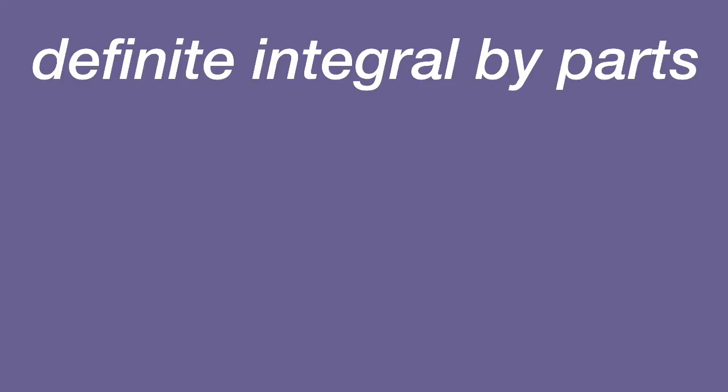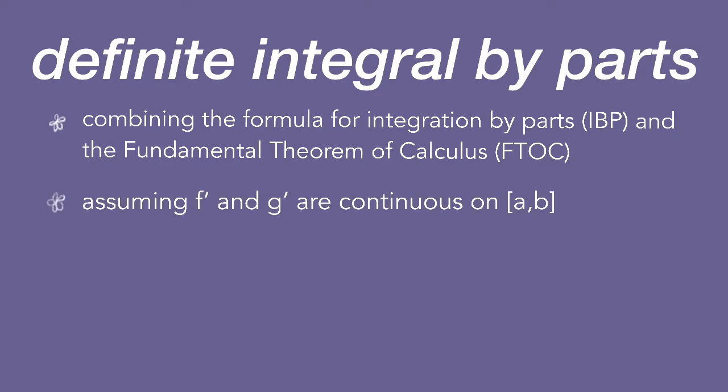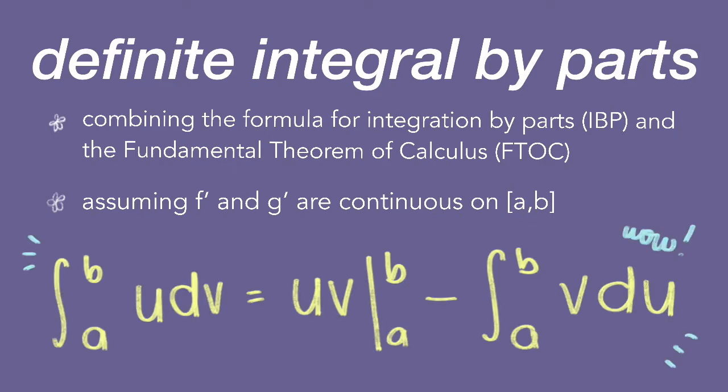So how does IBP change for a definite integral? Actually, not by much. We combine our IBP formula with the Fundamental Theorem of Calculus. For definite integrals, we assume that f prime and g prime are both continuous on the interval of integration. The formula becomes: the definite integral from a to b of u dv equals uv evaluated from a to b, minus the definite integral from a to b of v du.